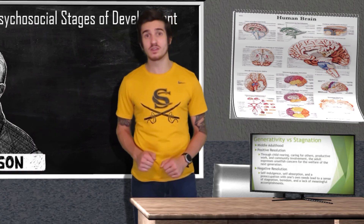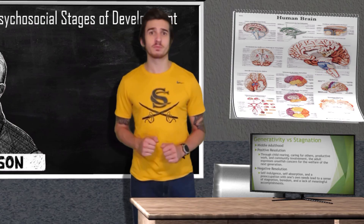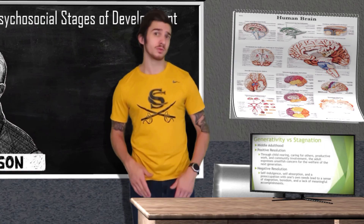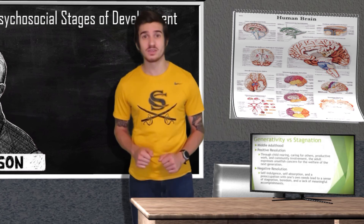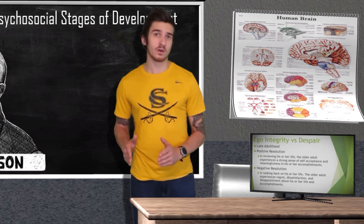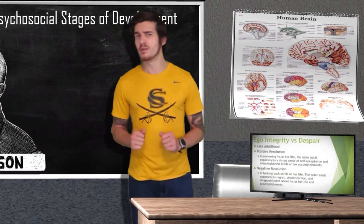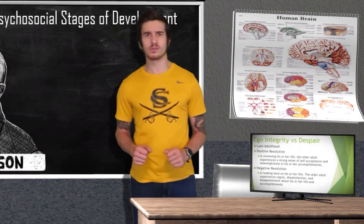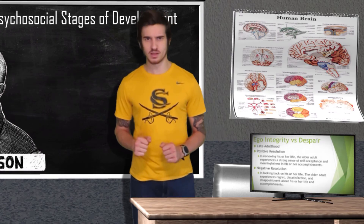During middle adulthood, generativity versus stagnation involves expressing unselfish concern for the next generation through child rearing, productive work, and caring for others. Excessive self-absorption can lead to stagnation and boredom. Erikson's final stage, ego integrity versus despair, occurs during late adulthood. The older adult looks back at their life — positive experiences yield self-acceptance and pride in accomplishments, while feeling unfulfilled leads to regret and despair about one's accomplishments or lack thereof.